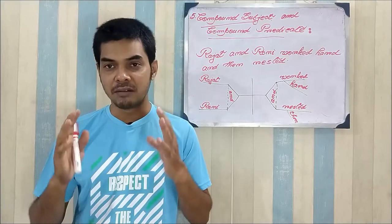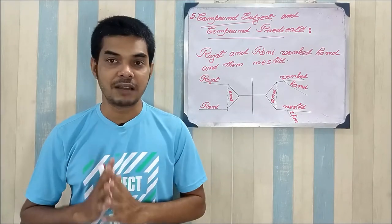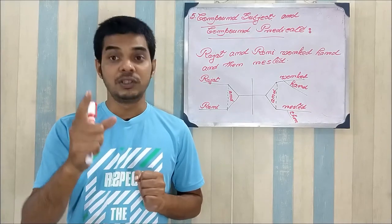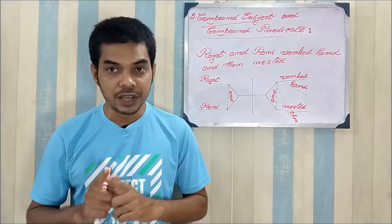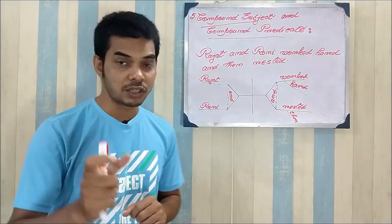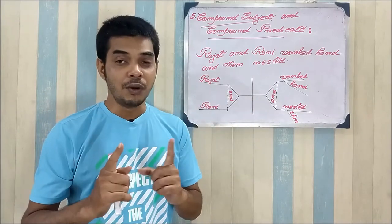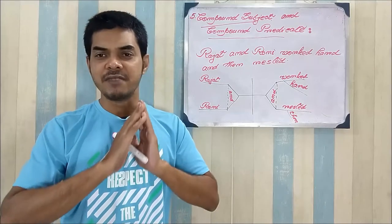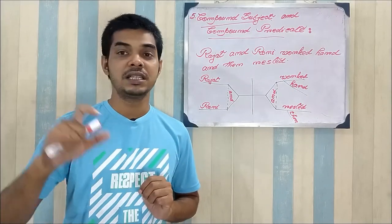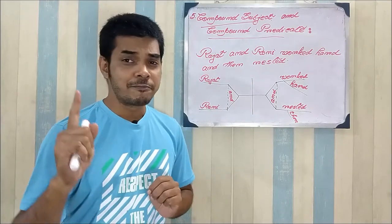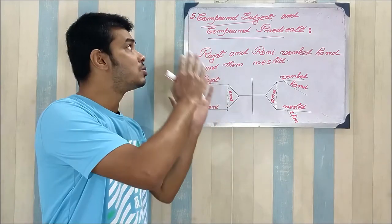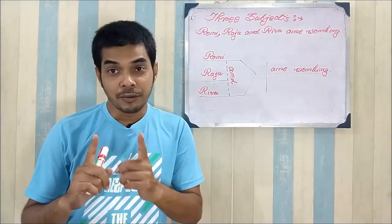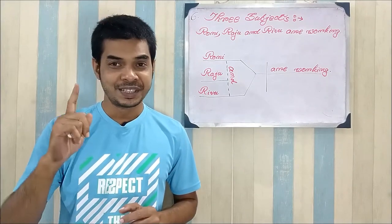I keep repeating this fact: you have to find out the logic in the sentence. Each and every sentence is produced with a logic. You find out the logic, and it provides you the skeleton. You put the components into that skeleton to get the sentence diagram. It will be very easy if you remember that everything is assembled logically, and your task is to find out that logic. With this, let's shift to the sixth rule for sentence diagramming.